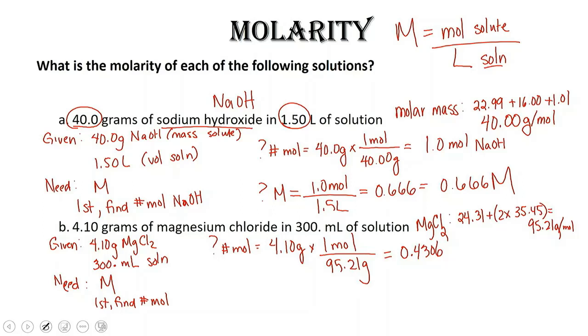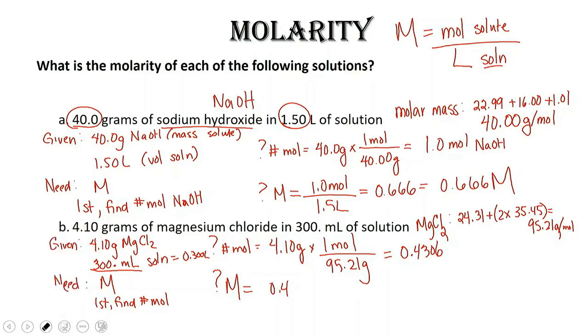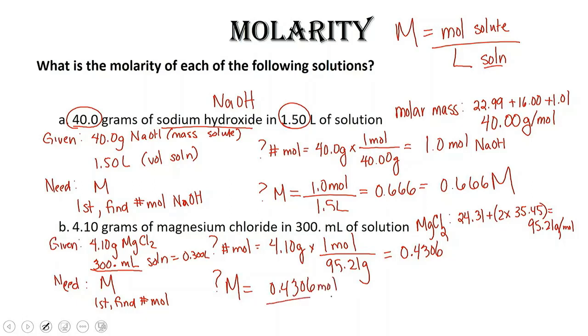Now, molarity is given in moles of solute per liter solution. The volume that we were given is 300 milliliters, so before we determine our molarity, we have to convert that volume into liters. So 300 milliliters equals 0.300 liters. So our molarity is 0.4306 moles divided by 0.300 liters, which gives us 0.1435. With the right number of significant figures, we get 0.144 molar.